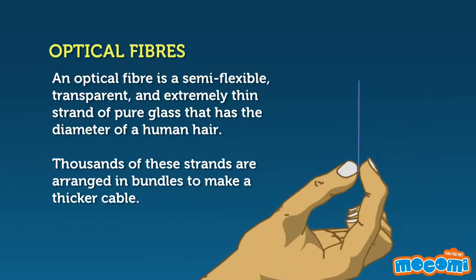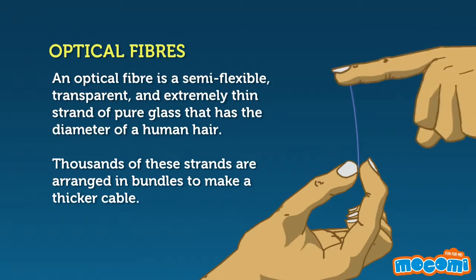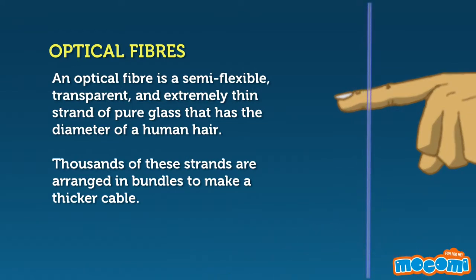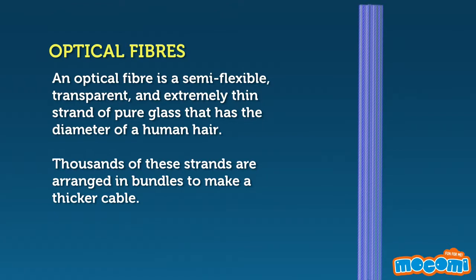Optical Fibres. An optical fibre is a semi-flexible, transparent and extremely thin strand of pure glass that has the diameter of a human hair. Thousands of these strands are arranged in bundles to make a thicker cable.